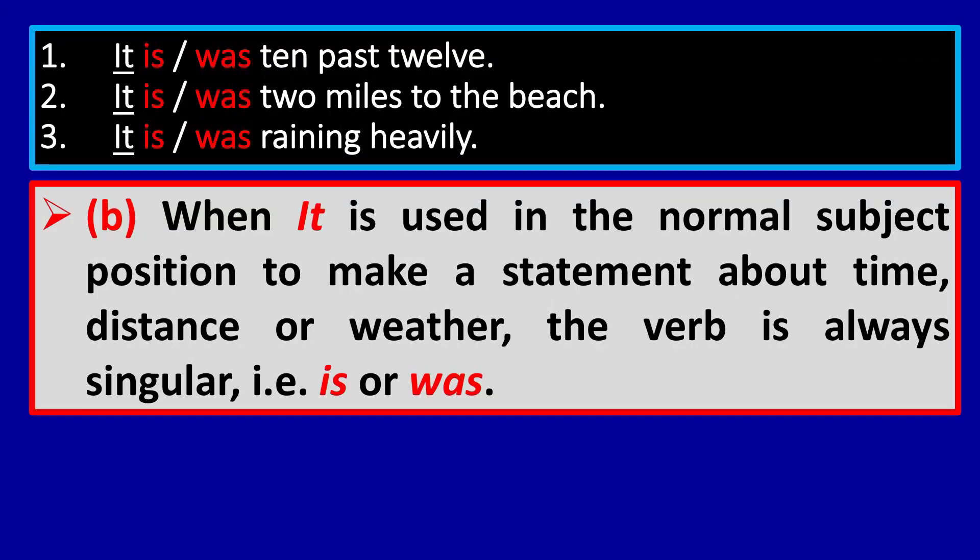It is 10 past 12. It is 2 miles to the beach. It is raining heavily. When the subject is 'it' — especially to make a statement about time, distance, or weather — the singular verb 'is' or 'was' is used.